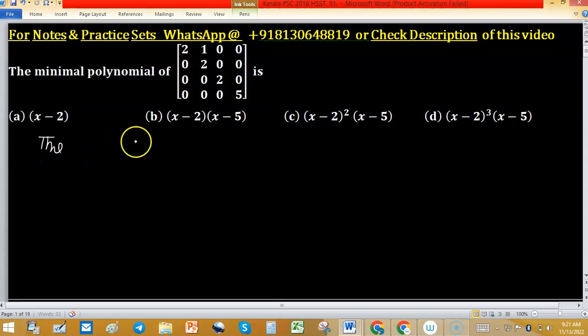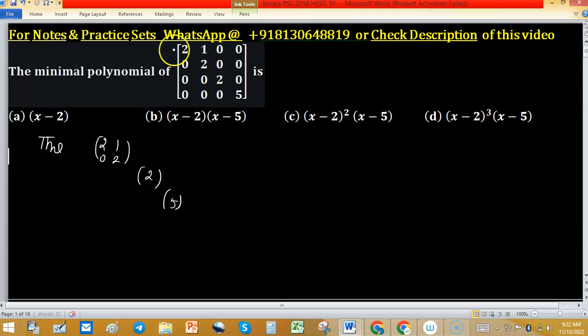The minimal polynomial of this given matrix—if we consider this matrix as a block matrix—the first block is [2, 0, 1, 2], second block is 2, and the third block is 5. You can identify blocks in the given matrix like this.